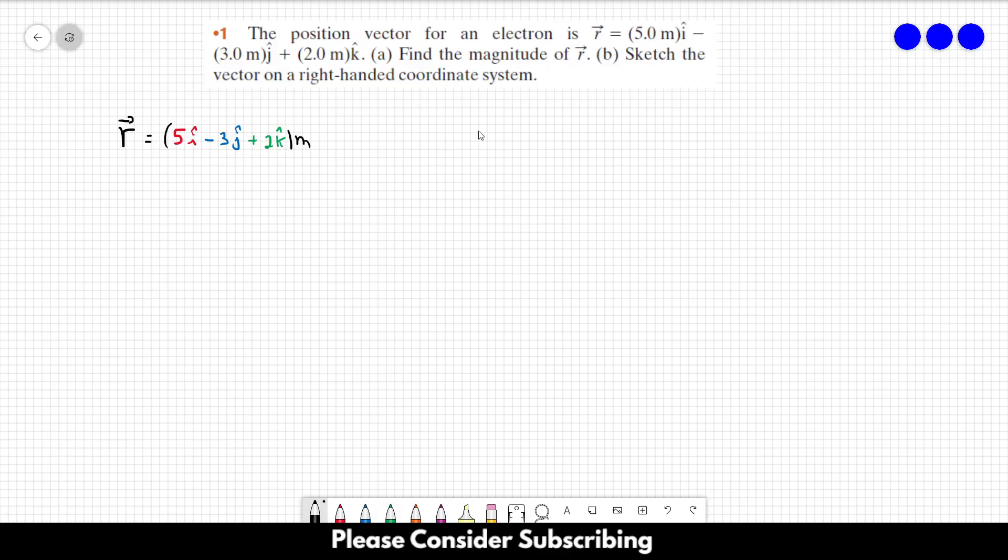So if we want to find the magnitude of a vector, it's always the same thing that we have to do. This is the symbol for the magnitude, these two bars over here. And then we just have to take the square root of the sum of each component squared.